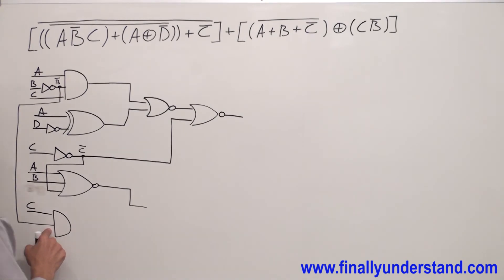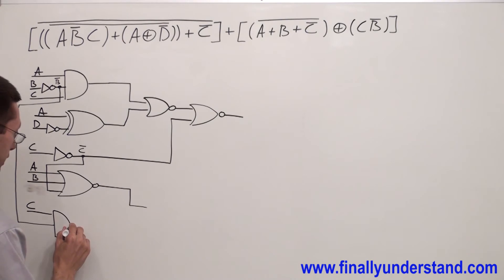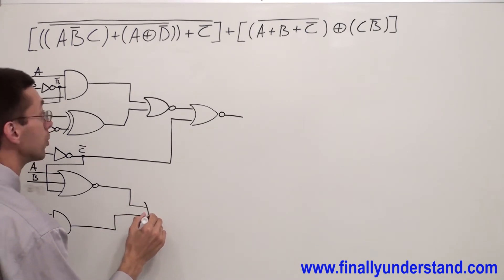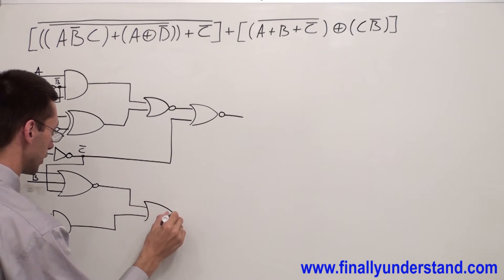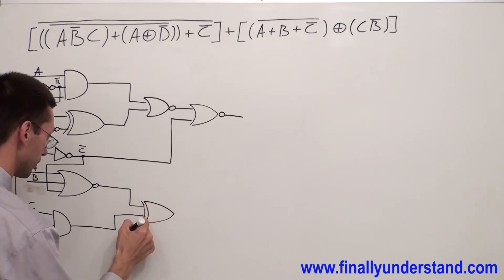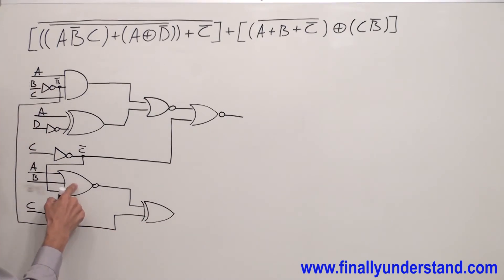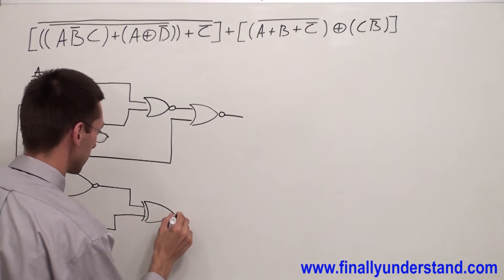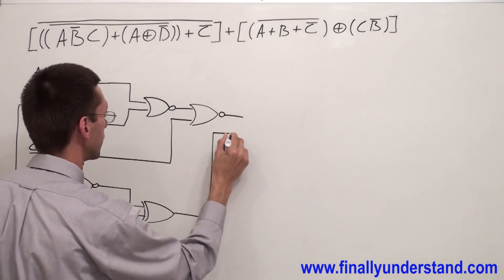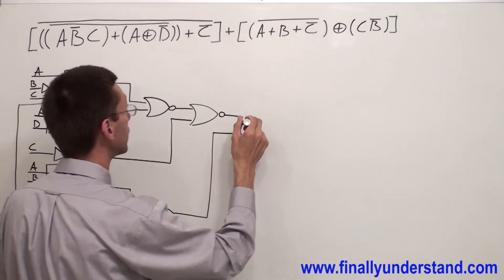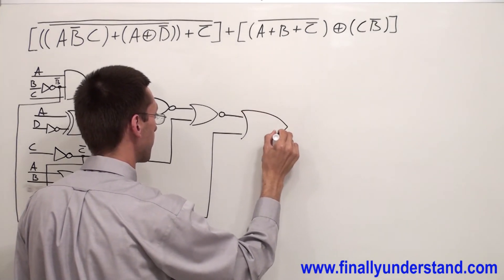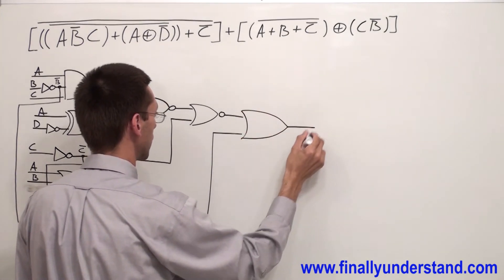This AND gate is going to be exclusively OR-ed with the NOR gate. And everything has to be OR-ed together.